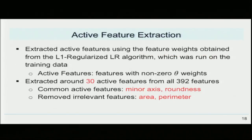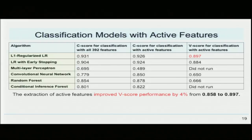Our second optimization technique was to use extracted active features — features with non-zero weights that are important for diagnosis. We extracted about 30 active features from the original 392 features. For example, the minor axis and roundness of the nuclei were selected as important features, but the area and perimeter were not. We obtained the C score for classification with these important active features and found that almost all algorithms improved in performance. For the top four performing models, the L1 regularized logistic regression model improved by 4%, from a V score of 0.858 to 0.897.